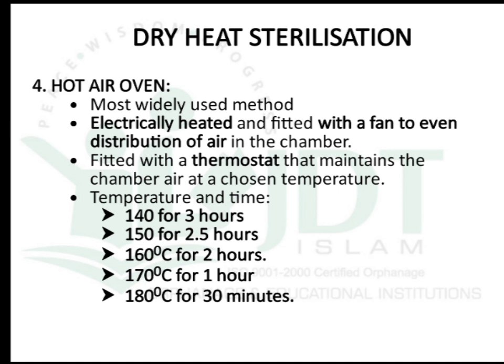The temperature and time conditions for a hot air oven are: 140°C for 3 hours, 150°C for 2.5 hours, 160°C for 2 hours, 170°C for 1 hour, and 180°C for 30 minutes. As temperature increases, the sterilization time can be reduced.